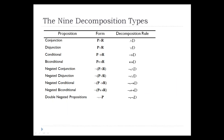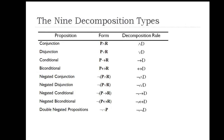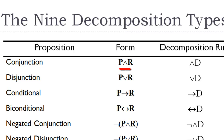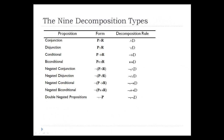There are nine different decomposition types: conjunction, disjunction, conditional, biconditional, and then the negated form of each one of these — negated conjunction, negated disjunction, negated conditional, negated biconditional — and the ninth one is the doubly negated proposition. For each one of these proposition types there corresponds a truth tree decomposition rule. For example, conjunctions have the form P caret R, and the corresponding rule is conjunction decomposition. For any formula you look at, there will be one decomposition rule to apply to it.